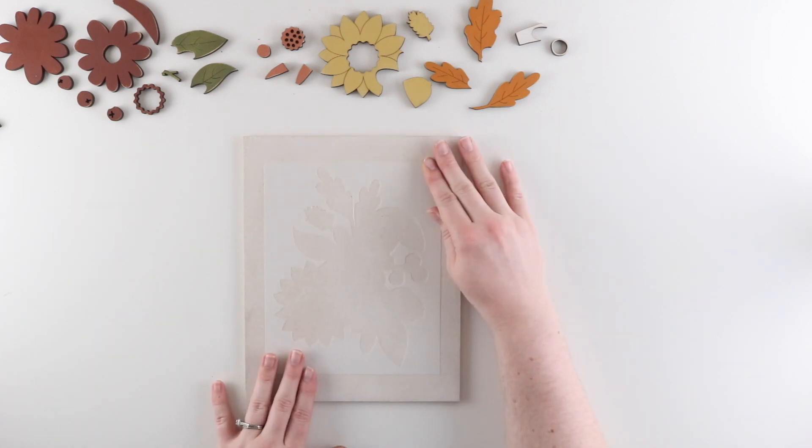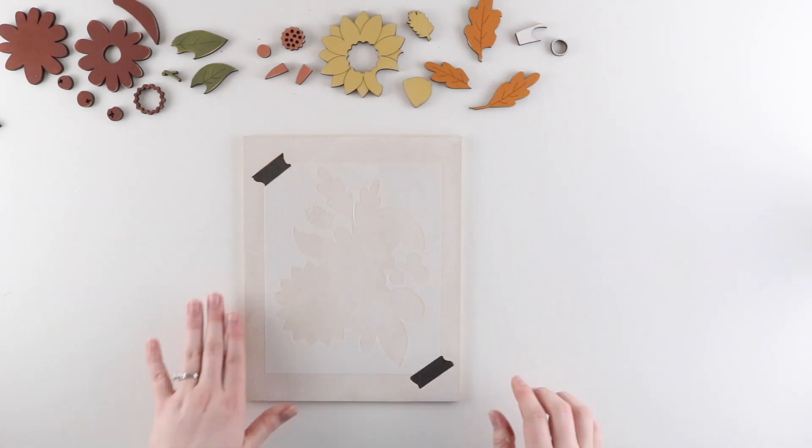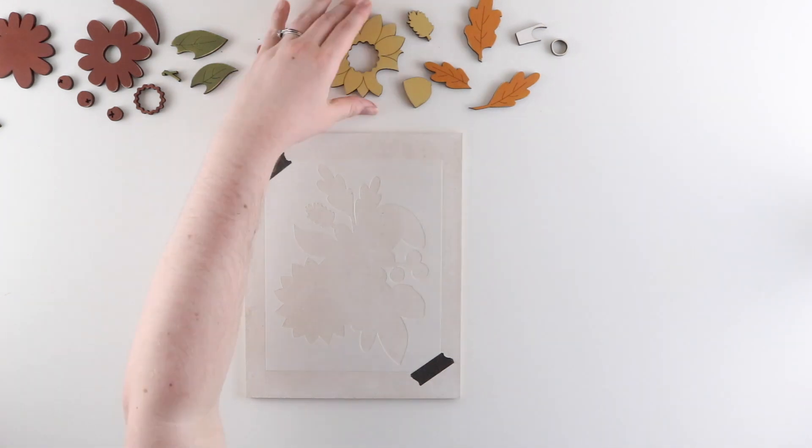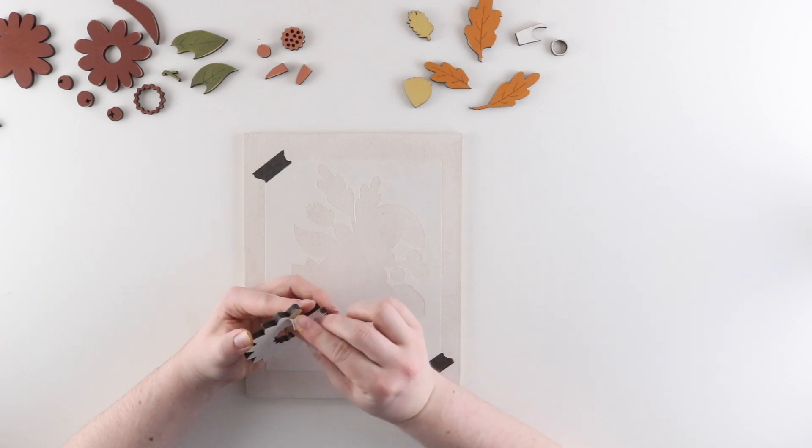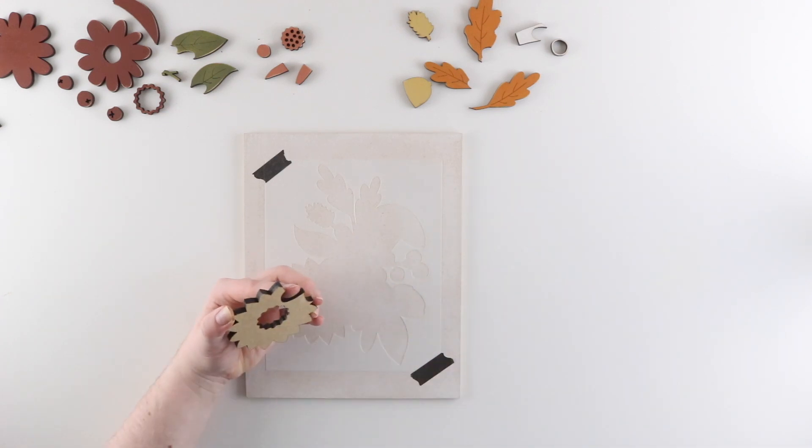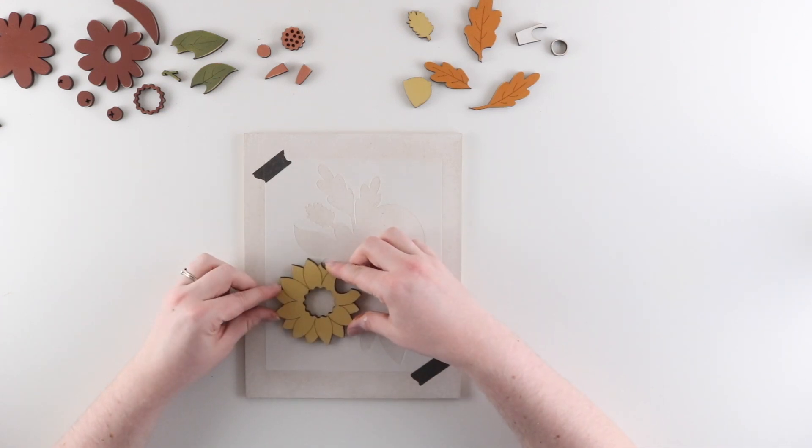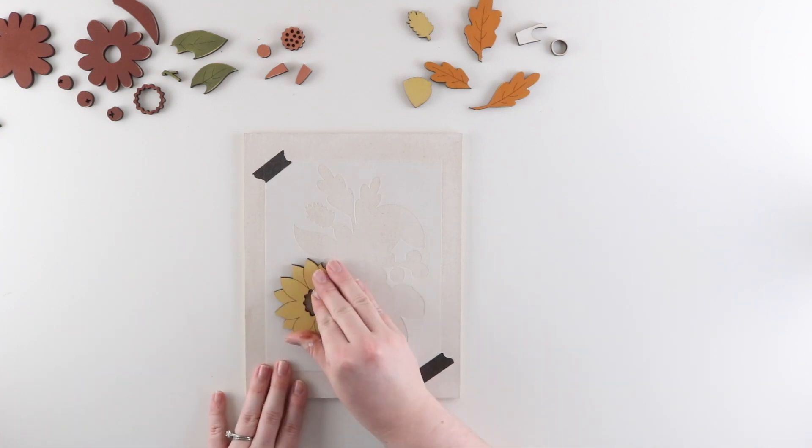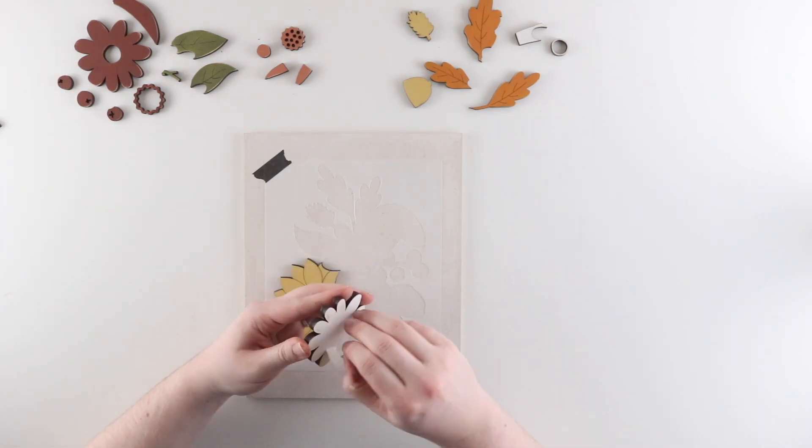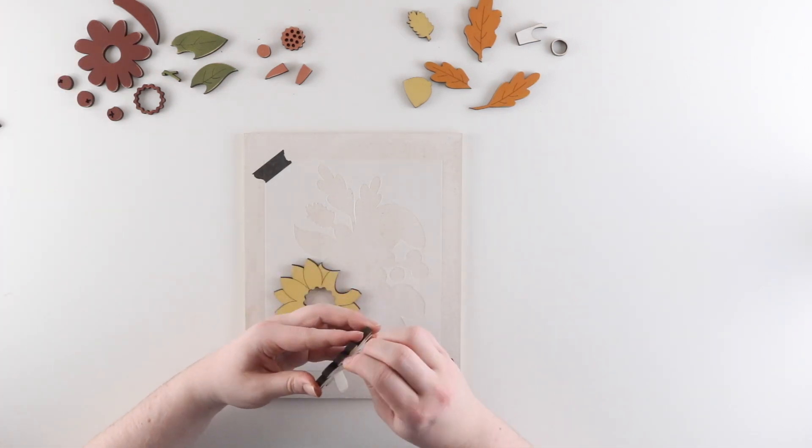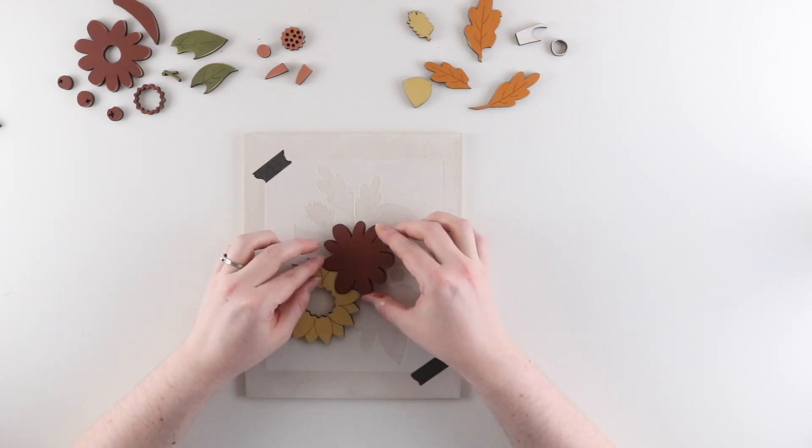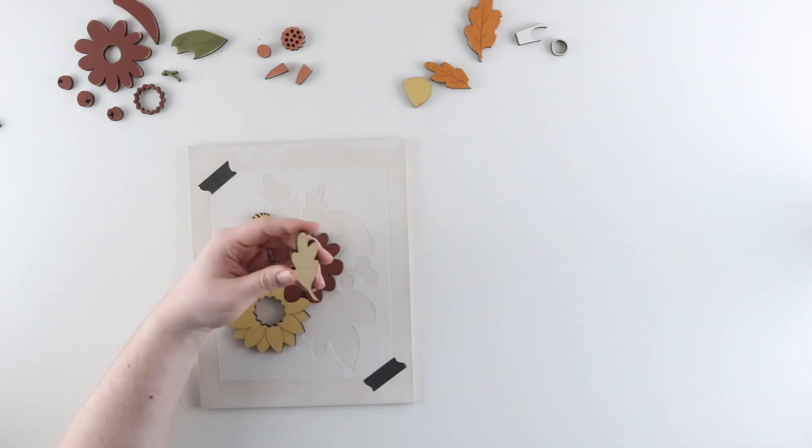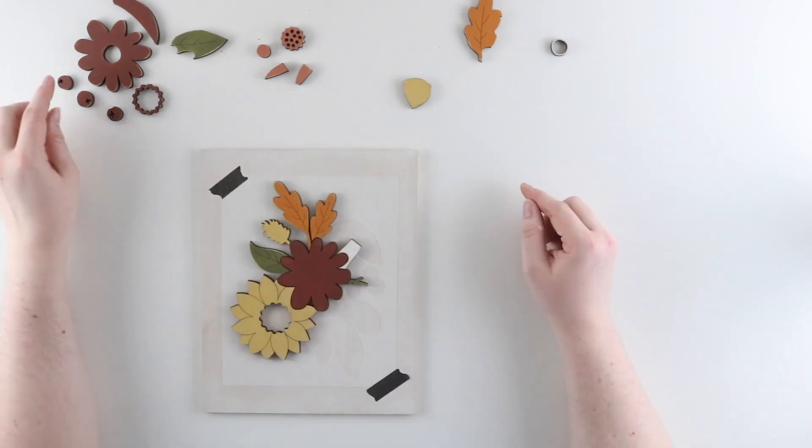Next we're going to assemble our autumn floral kit. Starting by centering the template on our insert, hold it in place with a few pieces of washi tape. Start off by placing the sunflower in the lower left, making sure that the petals match up with the template. You can either peel and stick as you go or lay it all out first to make sure that you have the placement correct. Next I'm going to place the solid version of the other large flower. Once these two flowers are in place everything else should fit nicely around them.